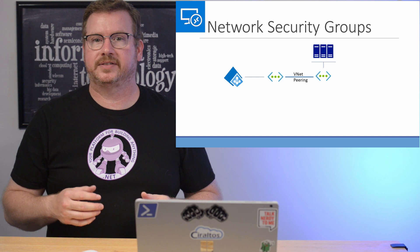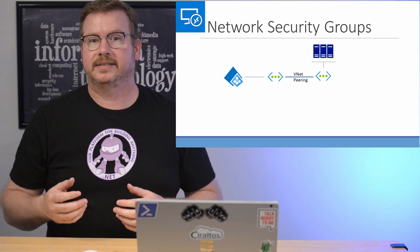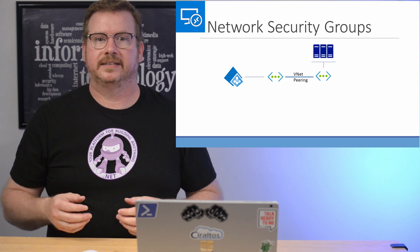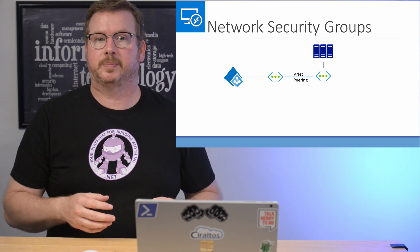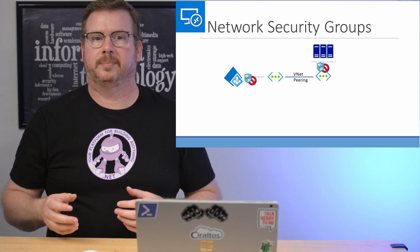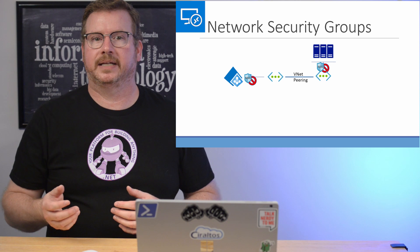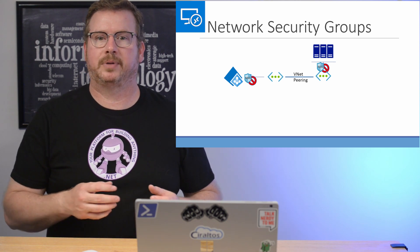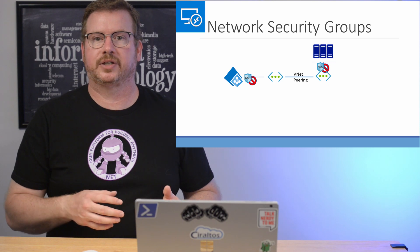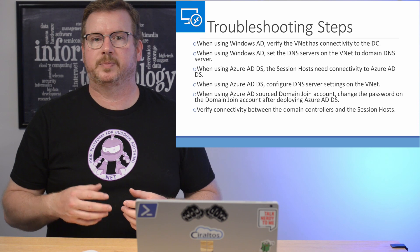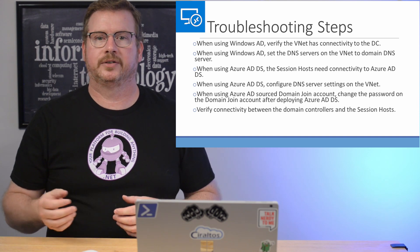At this point there should be connectivity between the session hosts and the domain services, DNS is in place, and the password is synchronizing. The next thing to verify is that there are no network security groups blocking traffic between the session hosts and the domain controllers. Network security groups can be applied to the network interface or the subnets. If you have network security groups in place, make sure they're not blocking communication between the session hosts and the domain controllers. Tip 6: make sure there are no network security groups blocking traffic between the domain controllers and the session hosts.